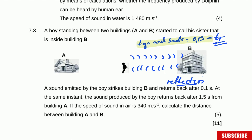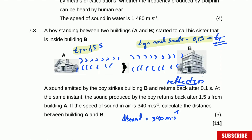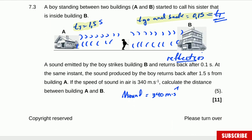At the same instant, the sound produced by the boy returns back after 1.5 seconds from building A. So the sound goes all the way to A and comes back after 1.5 seconds, meaning the total time for building A is equal to 1.5 seconds. The speed of sound in air is 340 meters per second. We need to calculate distance A and distance B separately and then add the two distances.